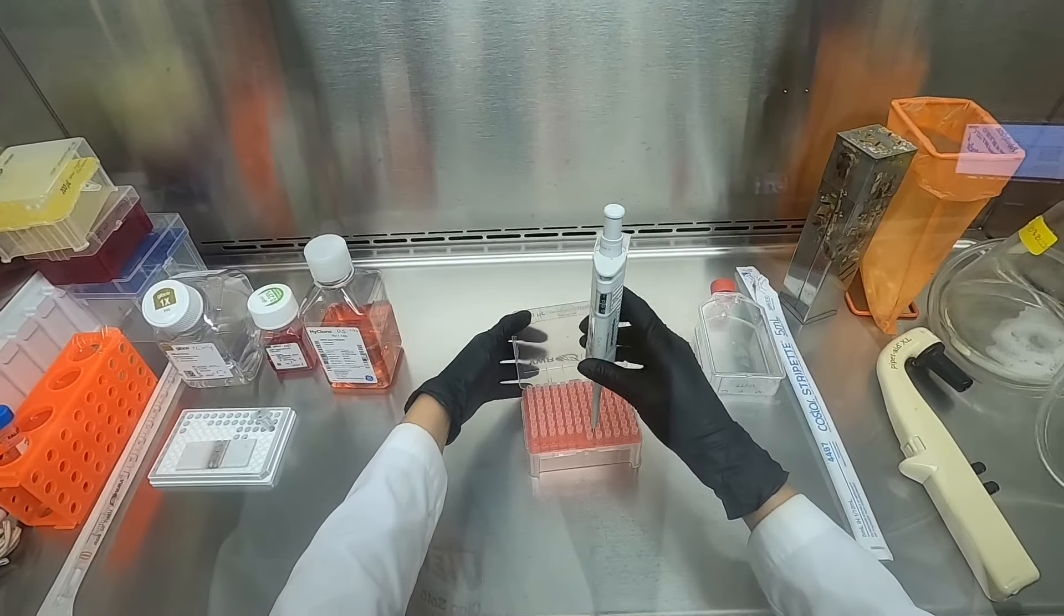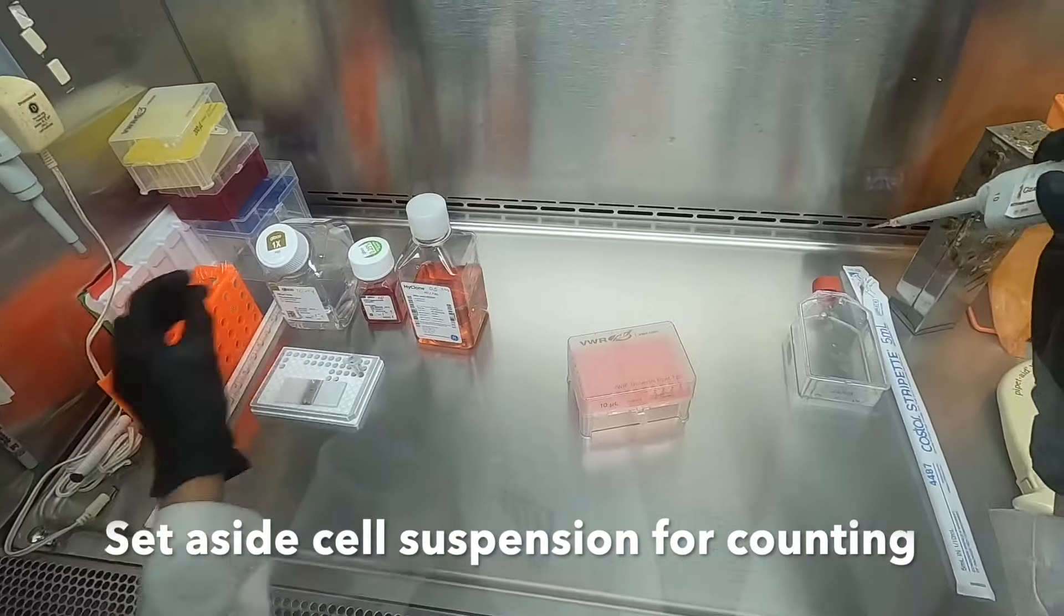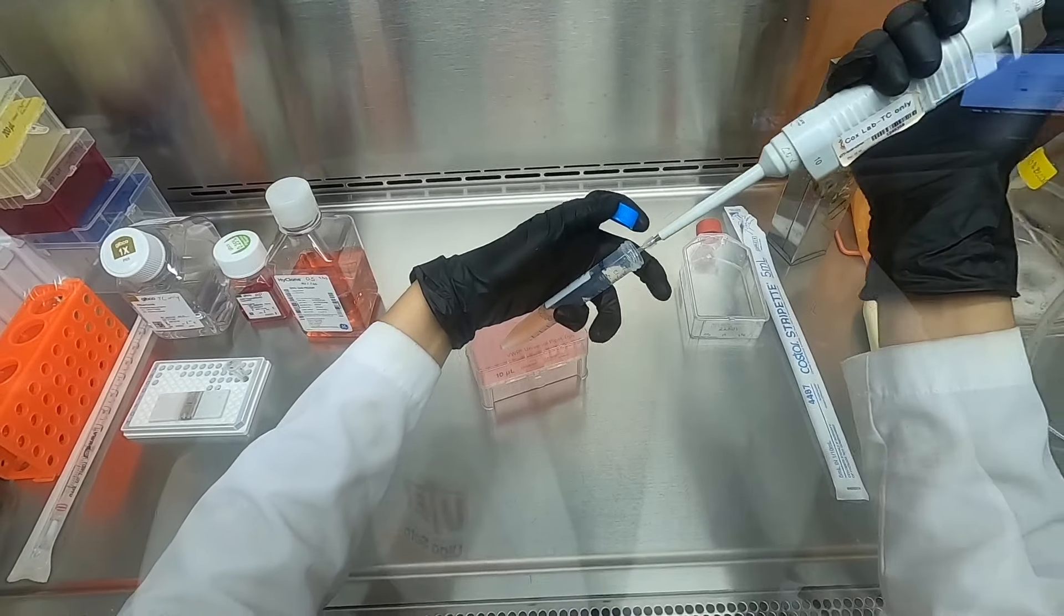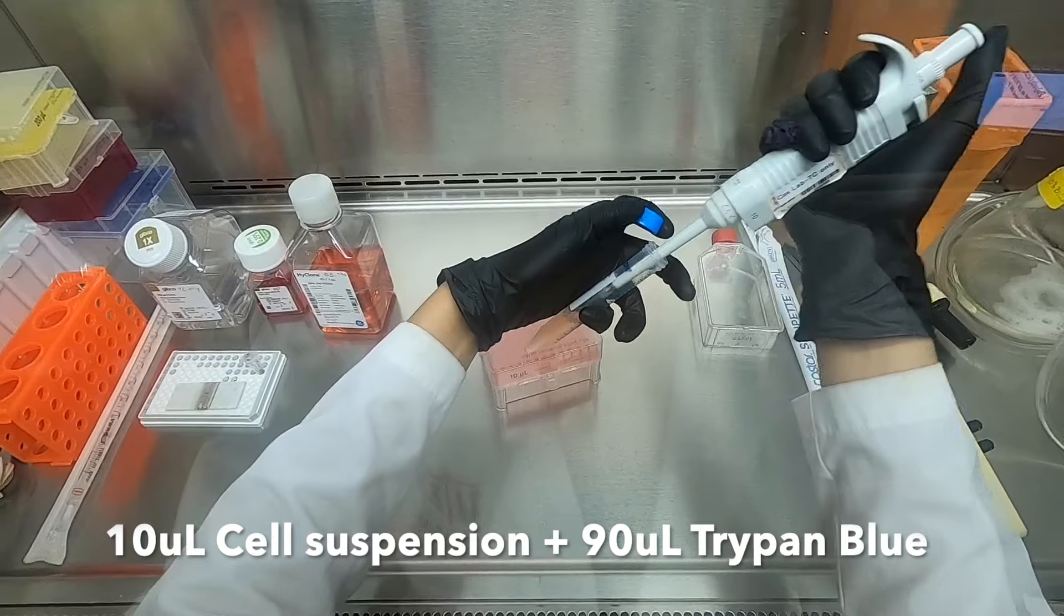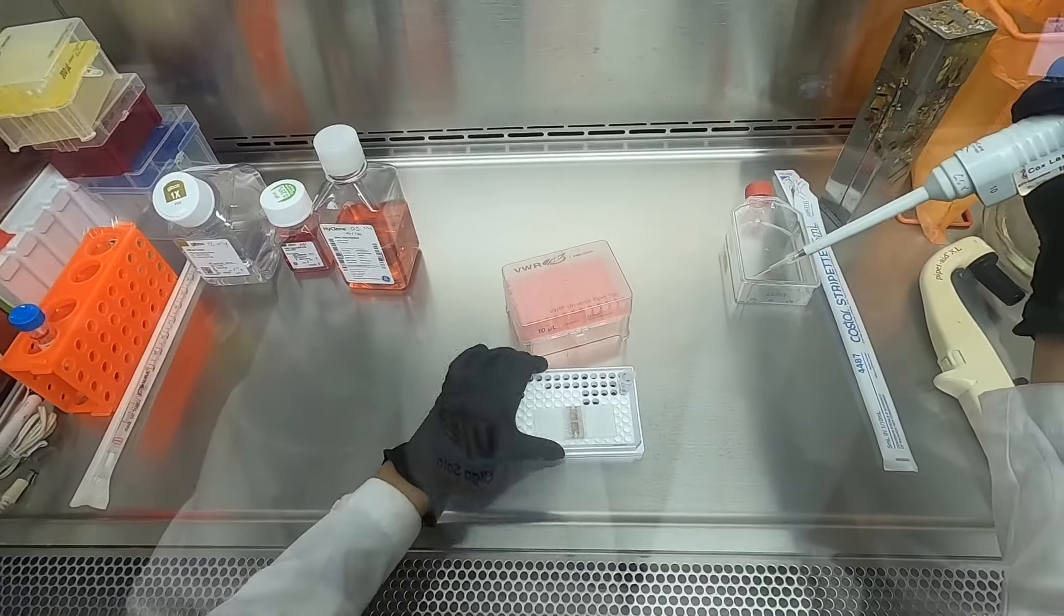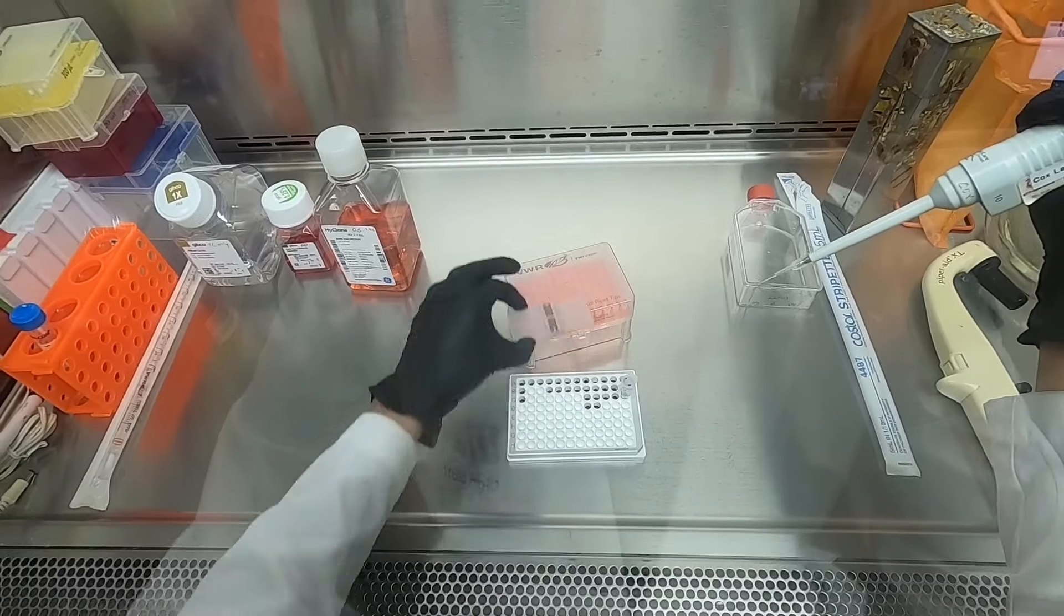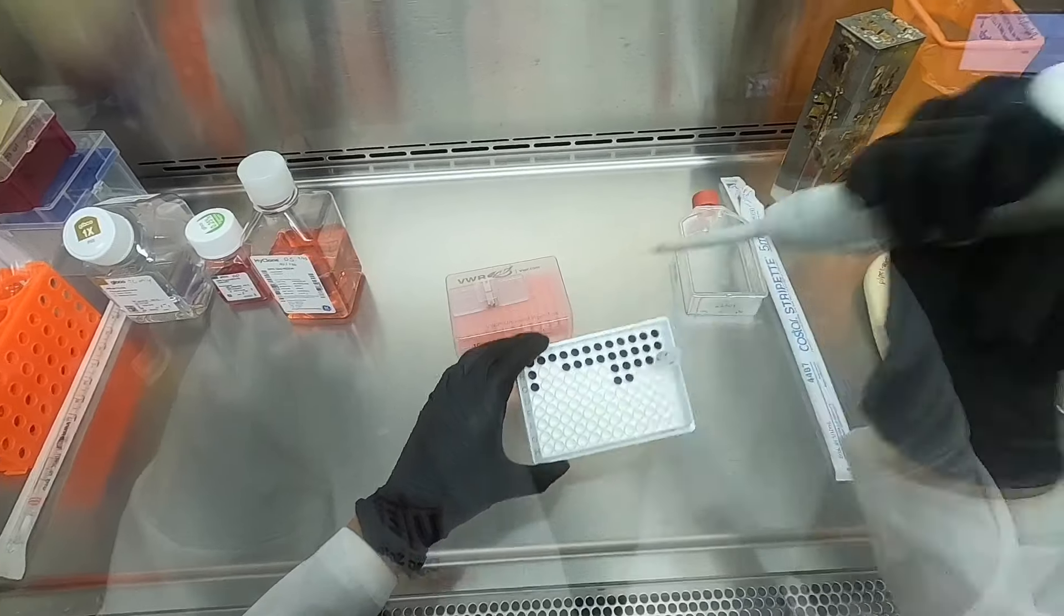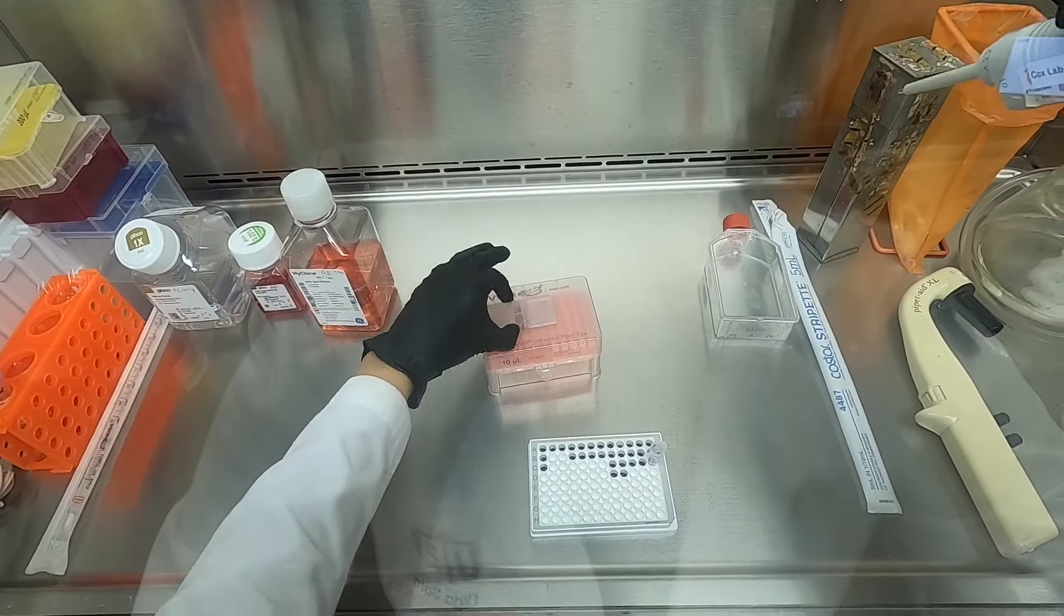From our cell suspension, we will now set aside 10 microliters in order to dilute with trypan blue. Our dilution factor for this suspension will be 10 since we will be adding 10 microliters of the cells to 90 microliters of trypan blue. Here we use a 96-well plate in order to mix our trypan blue with the cells.